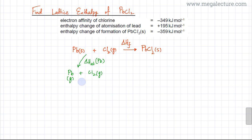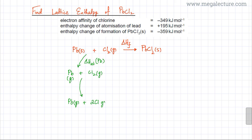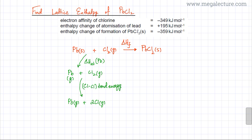In the next stage, we have chlorine in gaseous state as Cl2. Cl forms a single bond, so the Cl-Cl bond needs to be broken to obtain chlorine gaseous atoms. Nothing happens to lead — it remains as gaseous atoms. Breaking the Cl2 bond gives two gaseous Cl atoms. This step is equivalent to the bond energy of the Cl-Cl bond.